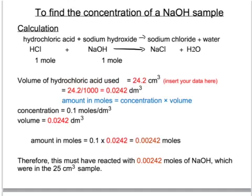Now let's say that the volume of the hydrochloric acid added, in other words our mean titer or titration value, was 24.2 cubic centimetres. We need to convert that into cubic decimetres by dividing by 1000, so that gives us a volume in cubic decimetres of 0.0242 cubic decimetres.